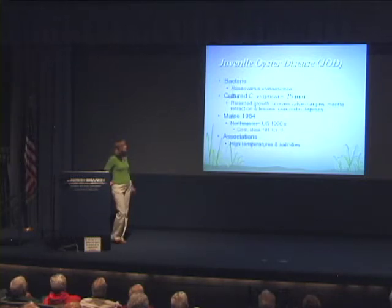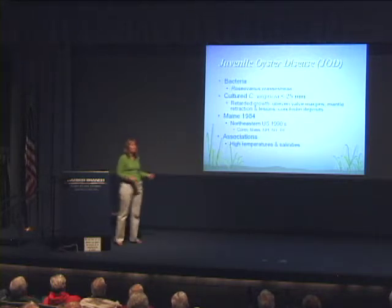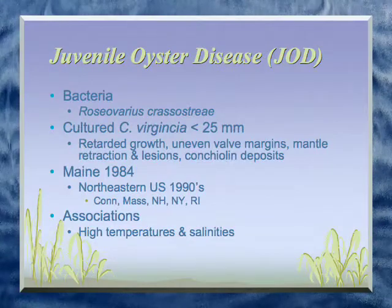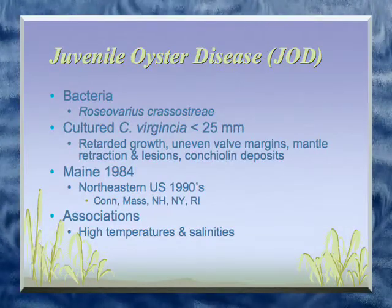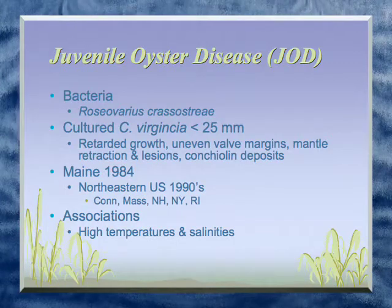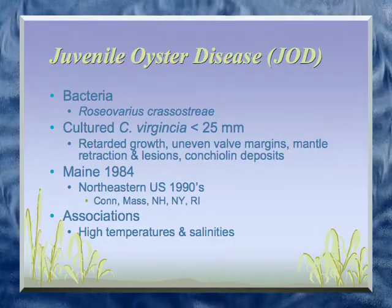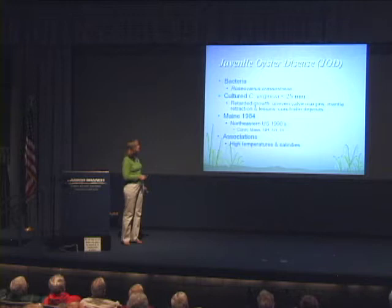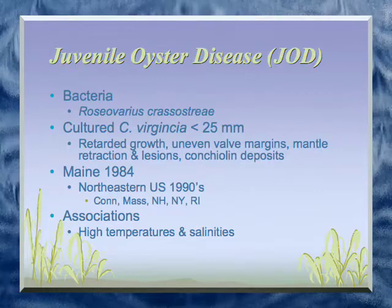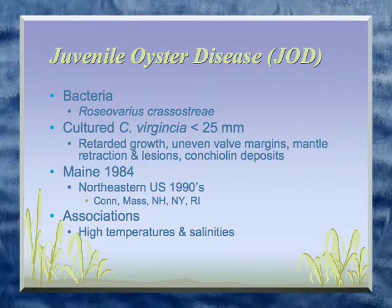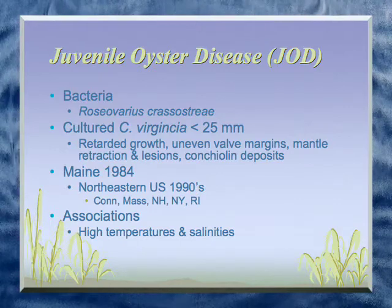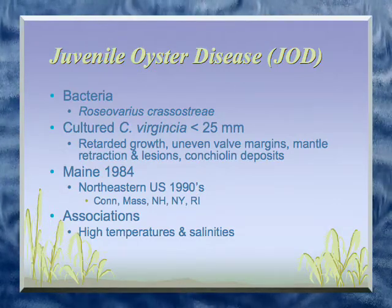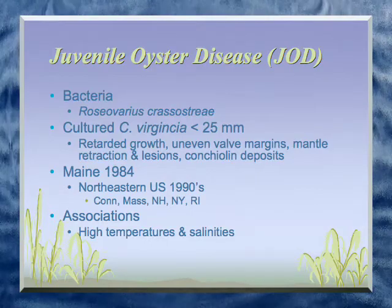Another bacterial disease — and we definitely consider this a hatchery disease — found only in a small area of the Northeast Atlantic seaboard is something called JOD. Two years ago this would have fallen under unknown etiology, because they always suspected a bacterial cause, but only in 2007 did they find the real cause. It hasn't been around for very long as far as we know — first reported in 1984 — and it's confined to the Northeastern United States. Again, the association is with high temperatures and high salinities.